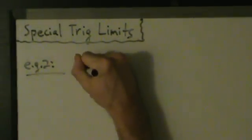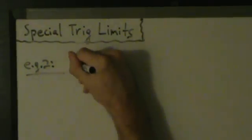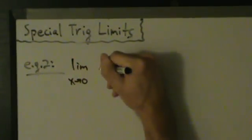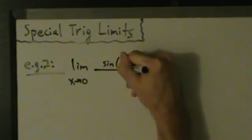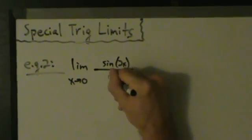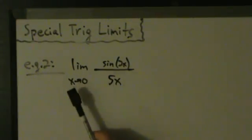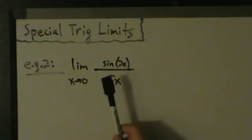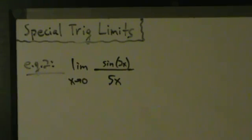Let's do example 2. Take the limit as x approaches 0 of sine of 2x divided by 5x. This is a lot like example 1, but instead of just x in the denominator, we now have 5x. Everything else is still the same — we want the limit variable, the denominator, and the sine argument to all be the same thing, but now we have x, 5x, and 2x.